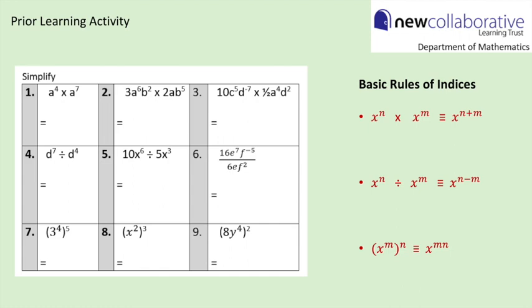Question 1: using the first basic rule of indices, we have a to the power of 11. Question 2: deal with numerical parts first — 3 times 2 is 6; a to the power of 6 multiplied by a to the power of 1 is a to the power of 7; b to the power of 2 multiplied by b to the power of 5 is b to the power of 7. So we have 6a to the power of 7, b to the power of 7. Question 3 works the same way, giving 5, a to the power of 4, c to the power of 5, d to the power of 5.